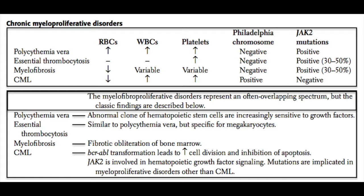In essential thrombocytosis, you're going to see a thrombocytosis — an increase in the platelet count — and usually the red blood cells and white blood cells are not affected, so you have an isolated thrombocytosis. Again, it is negative for the Philadelphia chromosome, but it is positive for the JAK2 mutation.